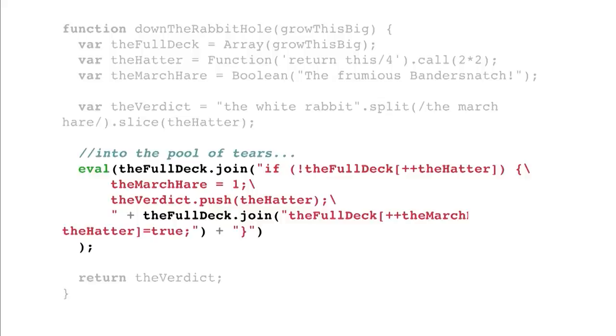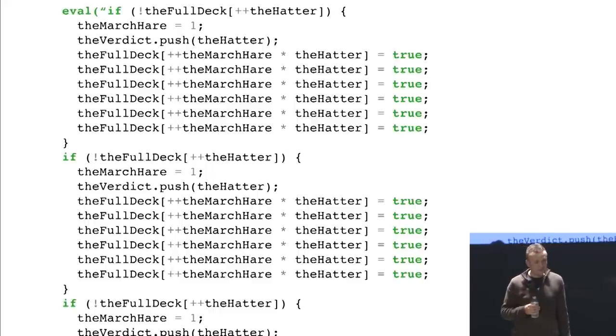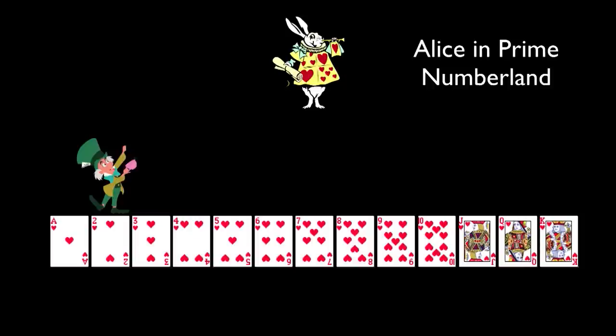So we can do the same thing here. We can do it to this code and see what we get. And oh, dear. Yeah, I know. But this is actually the generated code that comes from that eval statement. We can format it, and it makes a bit more sense. What we basically have is the Hatter is one factor, and the March Hare is the other factor. And if you multiply those together, the result is not a prime number. Let me show you how this works. So we have a set of playing cards, and the Mad Hatter is one factor, and he's set to two. And then the March Hare is the other factor, and he multiplies by two, three, four, et cetera.